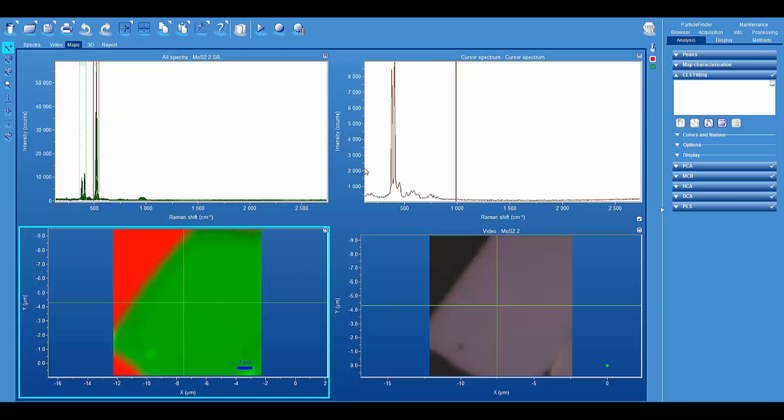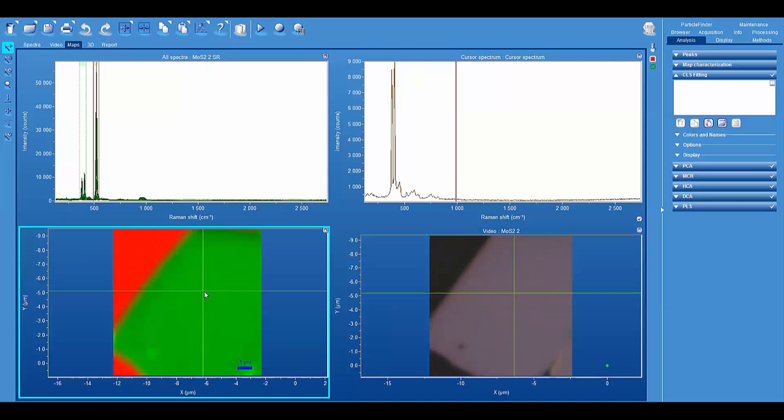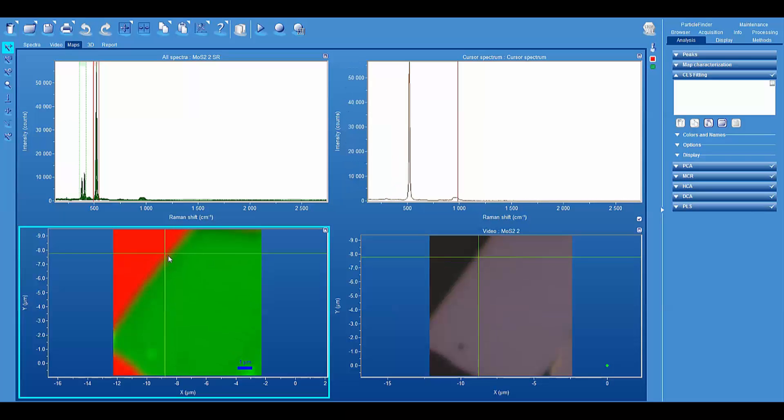And the spectrum in the upper right hand corner is the so-called cursor spectrum. That is to say that spectrum corresponds to the spectrum associated with the location of the crosshairs in either of the images below. So now we see silicon and now we see essentially just the molybdenum disulfide and we get to the edge, then we see some silicon coming through.